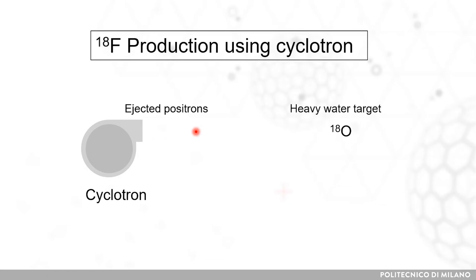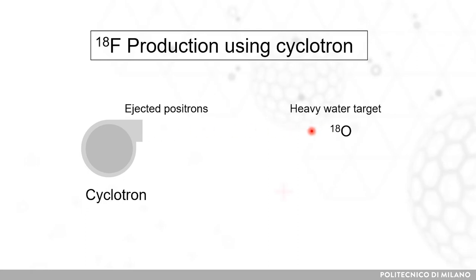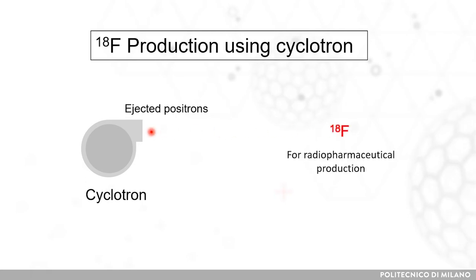Many positron-rich isotopes commonly used for PET imaging can be prepared using this technique. The targets are selected so as to achieve the intended radioisotopes. For example, bombardment of oxygen-18 labeled water, nitrogen-14 gas, and xenon-124 produce fluorine-18, carbon-11, and iodine-124 respectively.